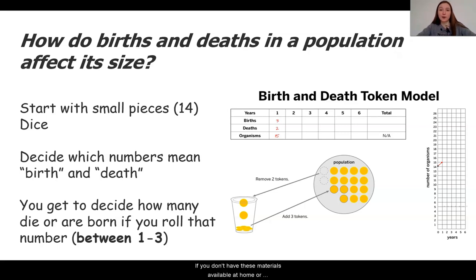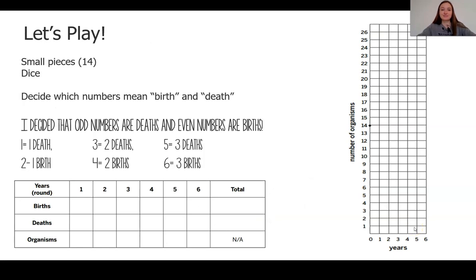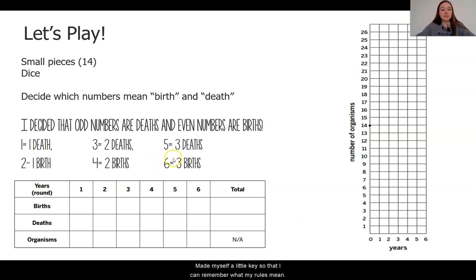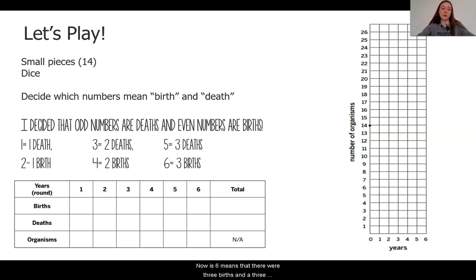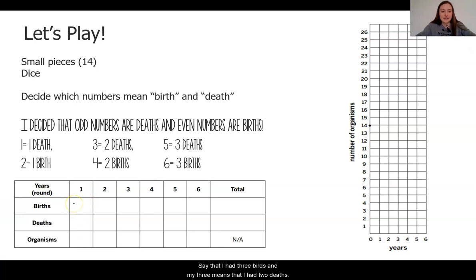If you don't have these materials available at home, or if you just want to play with me, then continue watching the video and we can play together. I am going to make sure that the odd numbers on my dice are deaths and the even numbers are births. I made myself a little key so that I can remember what my rolls mean. So let's get going. I rolled a 6 and I also rolled a 3. A 6 means that there were 3 births and a 3 means that there were 2 deaths.